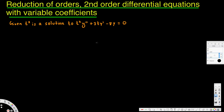In this video we are going to see an example on reduction of order. We have a solution provided and this is our differential equation. Whenever we have one solution provided, we equate y2 equal to v — a function of t — multiplied by the given solution t squared. Our goal is to find what v(t) is, and that's why we are going to use reduction of order.